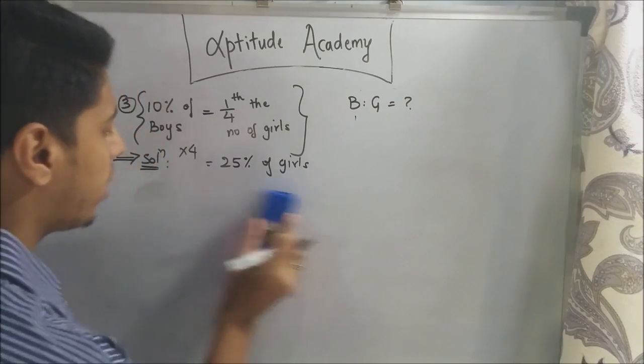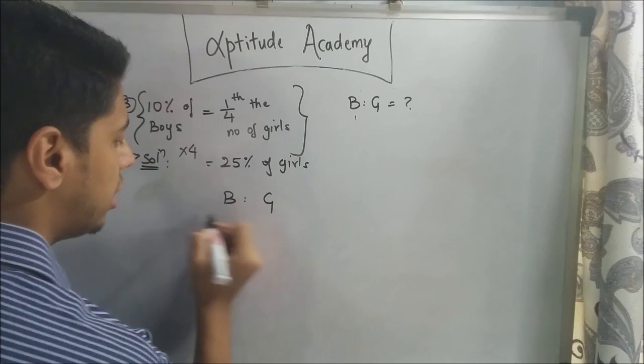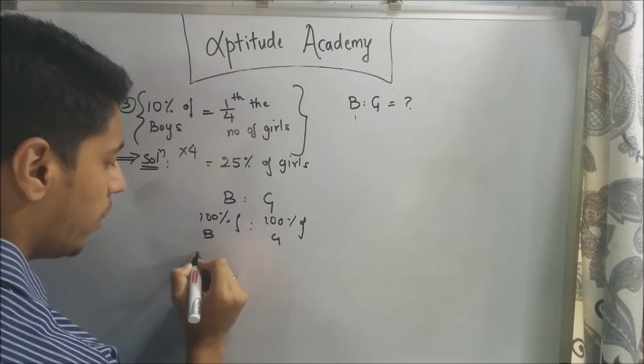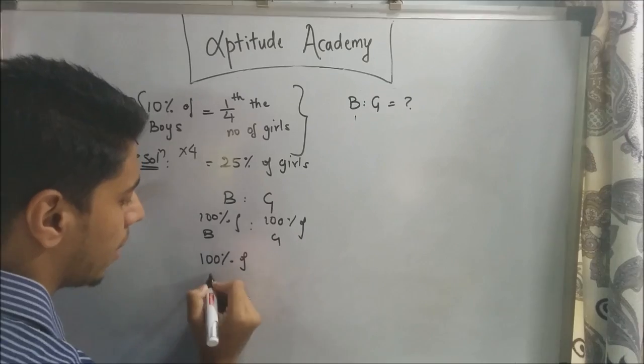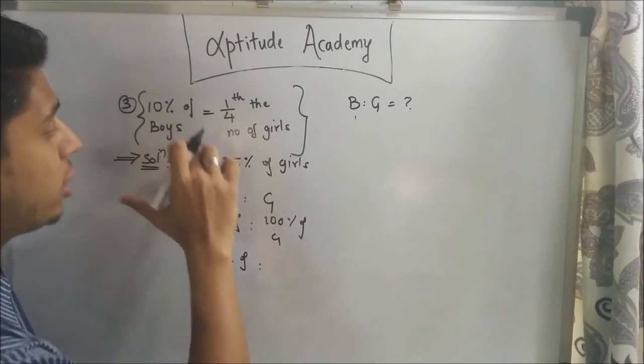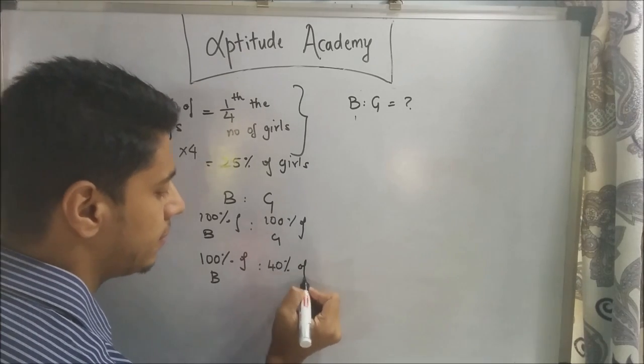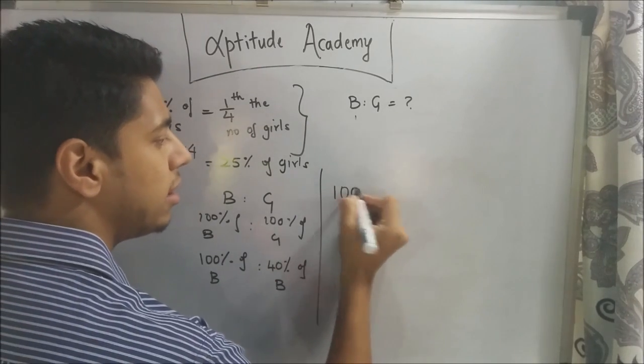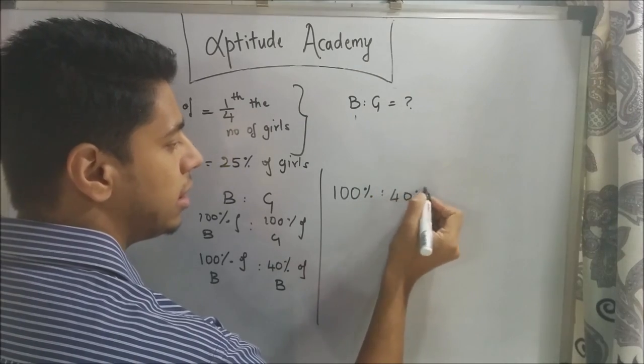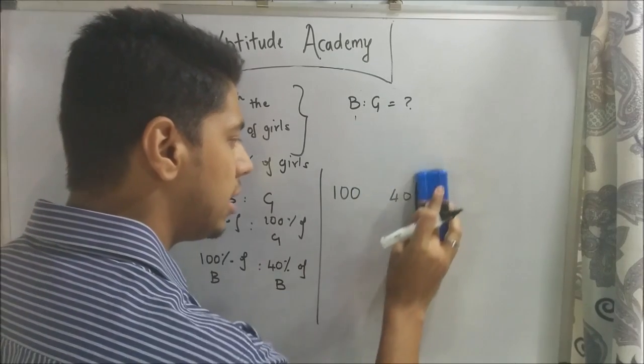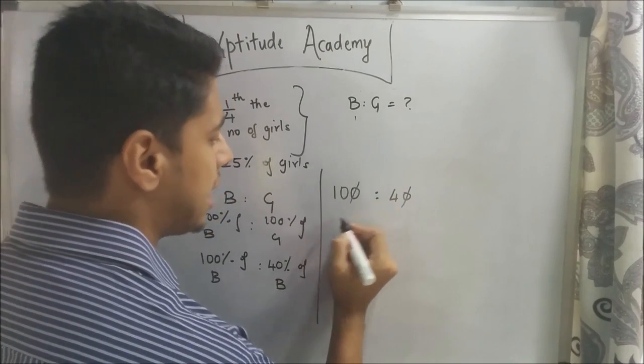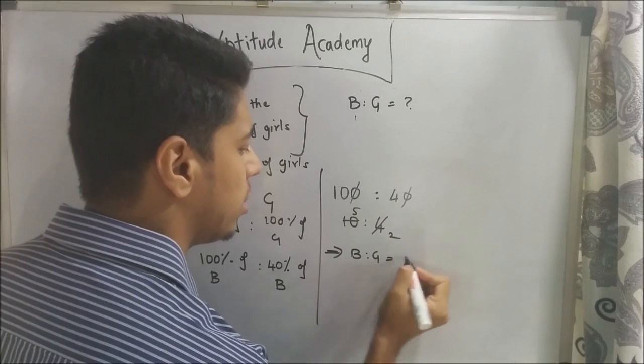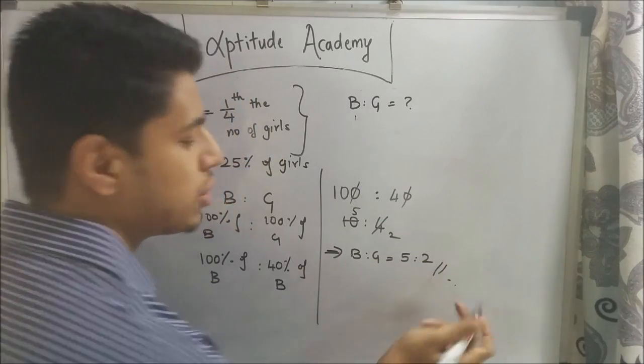Now write the boys to girls ratio: 100% of boys to 100% of girls. 100% of girls equals 40% of boys. Since both are percentages of the same quantity, eliminate the percentages: 100:40. Simplify: 10:4, then 5:2. The answer is boys to girls equals 5:2.